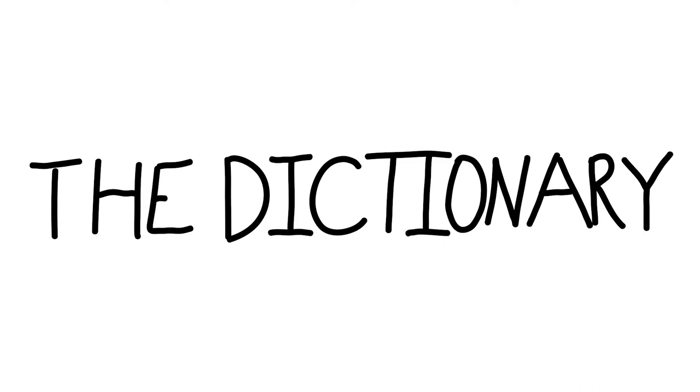Next we have the word ail, A-I-L, first form. This is a verb from the 12th century. Transitive: to give physical or emotional pain, discomfort, or trouble to, as in this floor is ailing my legs and butt. Intransitive: to have something the matter, especially to suffer ill health. The etymology is from Old English eglan, akin to Gothic agljan, which means to harm. Second form of ail is a noun from the 13th century with the synonym ailment.